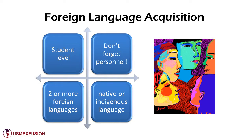Foreign language acquisition. It is important to develop foreign language capacity at your institution, with students reaching at least the B2 level of the Common European Framework of Reference for Languages, or an upper intermediate level. This level of foreign language acquisition should be strived for not only in students, but in personnel as well. Your institution should offer two or more foreign languages depending on local and regional needs, and you should consider offering classes of a native or indigenous language.